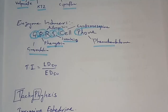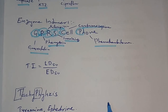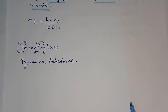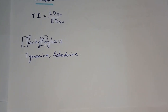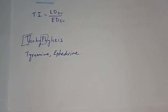Therapeutic index is the ratio of LD50 by ED50, that is median lethal dose divided by median effective dose. Tachyphylaxis — you should know this definition. The examples of drugs exhibiting tachyphylaxis are tyramine and ephedrine, which you can remember from the letters T and PH in the word tachyphylaxis.